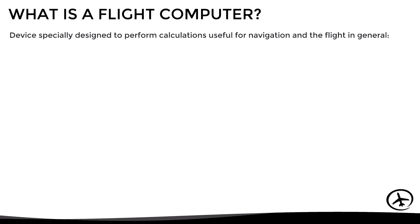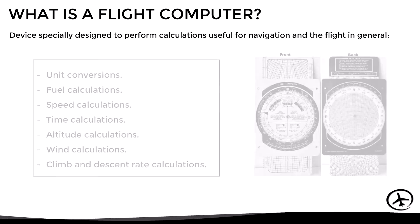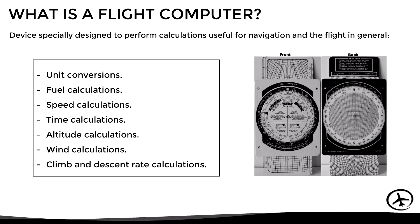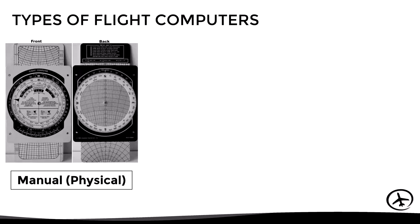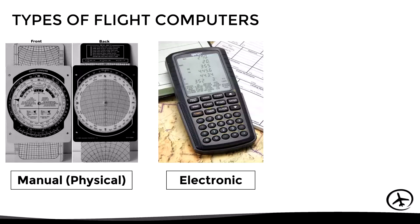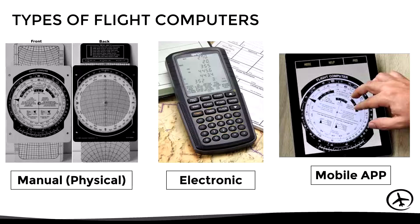In the second part we will look at how to solve navigation problems related to the effect of wind, which includes the calculation of the wind correction angle. With that said, a flight computer is a device specially designed to perform calculations useful for navigation and flight in general. There are different types and models, but in this video we will focus on the E6B, which is one of the most popular models. The flight computer also comes in different forms: manual, electronic, and mobile applications.